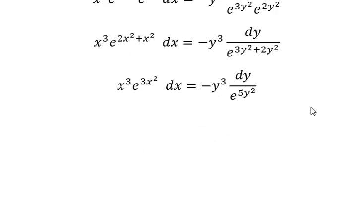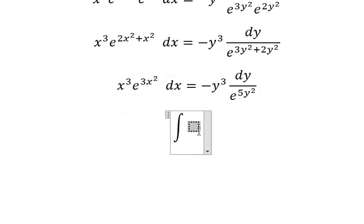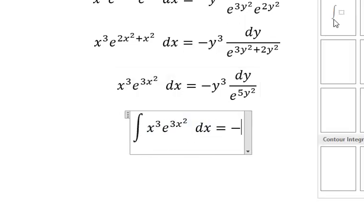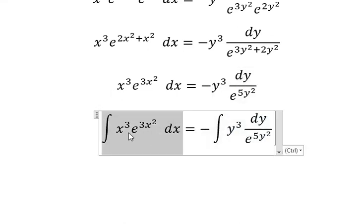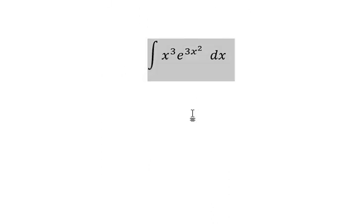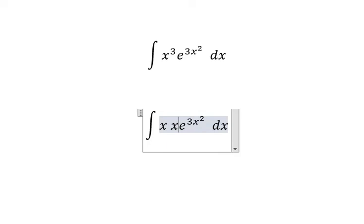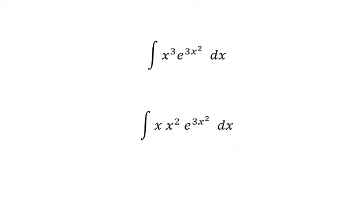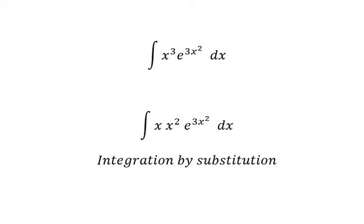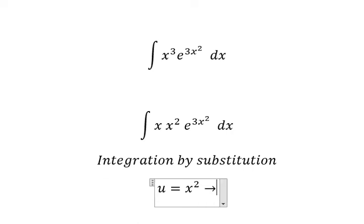Now we can put the integration for both sides. Now I will consider this one. We have x to the power of 3, which we can put as x multiplied by x squared.